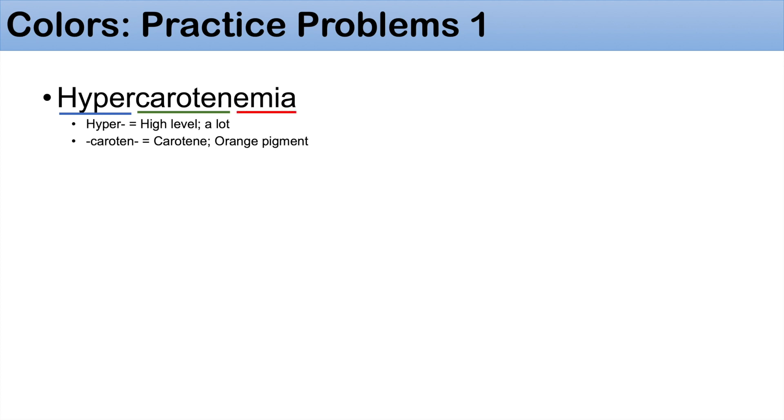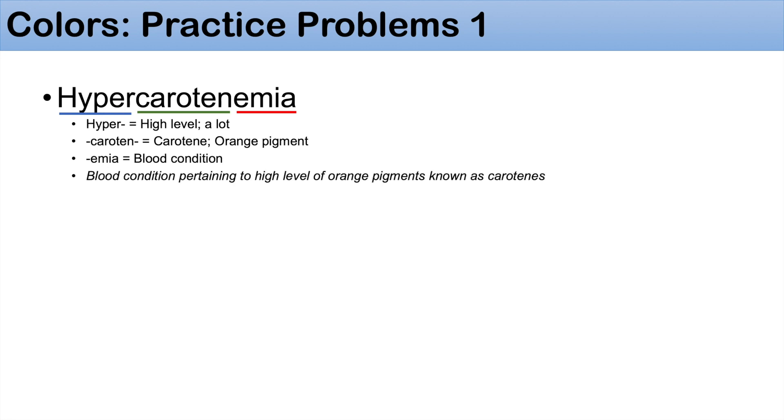Now let's put these to practice. The first practice problem is the word hypercarotenemia. Hyper means high level or a lot. Carotene is a chemical that has an orange pigment, so we can think of orange. The suffix emia means blood condition. So hypercarotenemia means a blood condition pertaining to high levels of the orange pigment known as carotene. Sometimes when you see a patient that appears very orange, they might have hypercarotenemia.